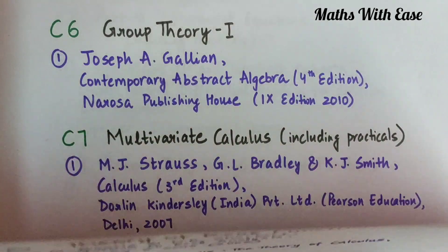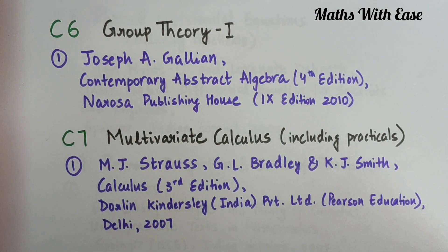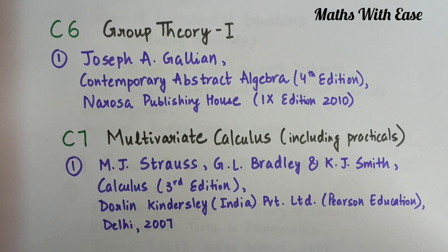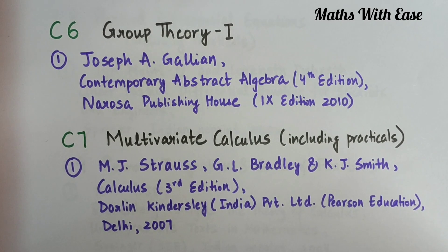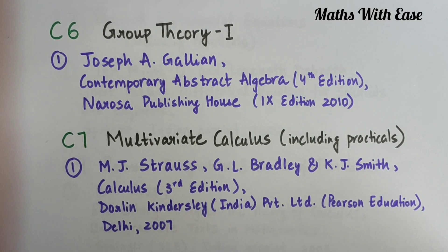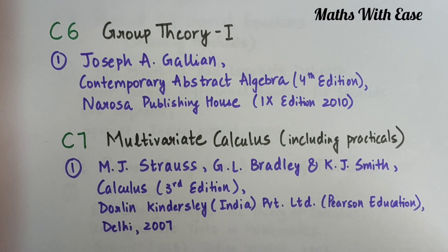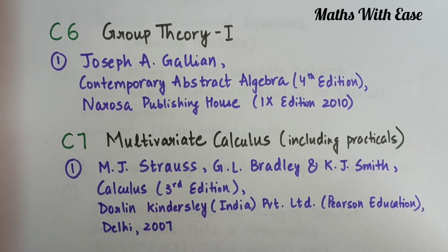Moving on to the next subject, C6 which is Group Theory 1. For this subject, we just have only one book which is Joseph A. Gallien, Contemporary Abstract Algebra. This Gallien book is a very famous book for Group Theory.